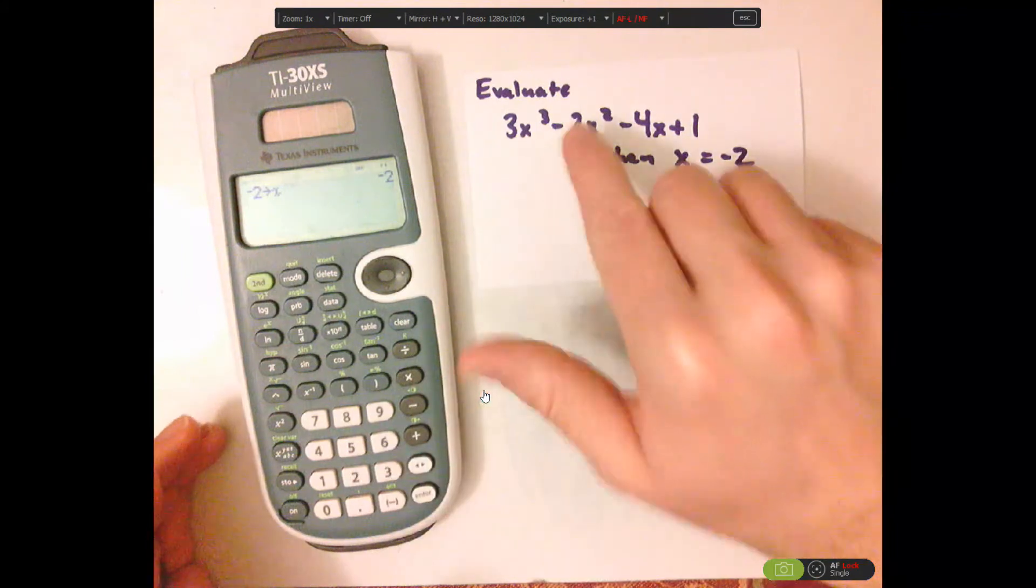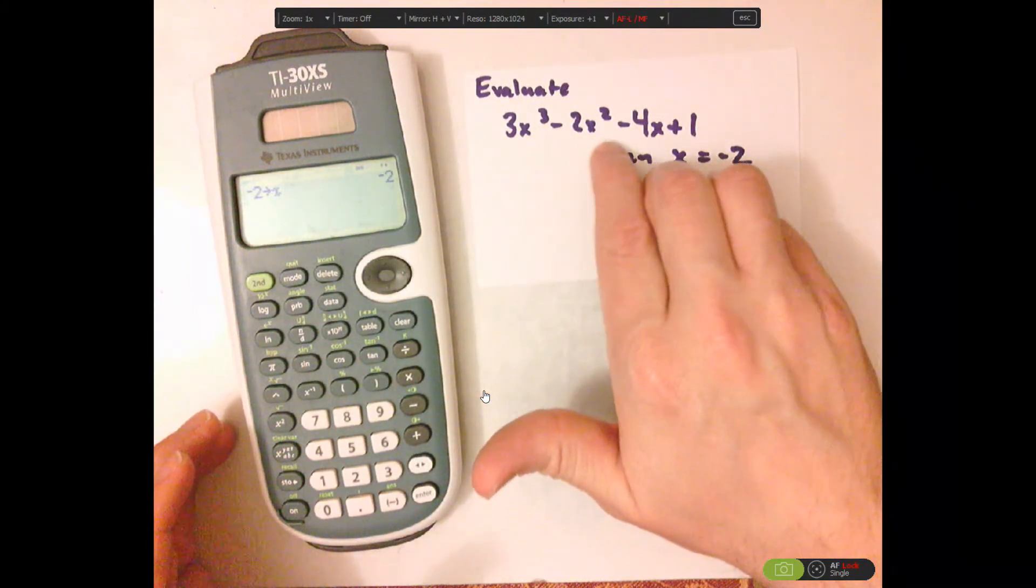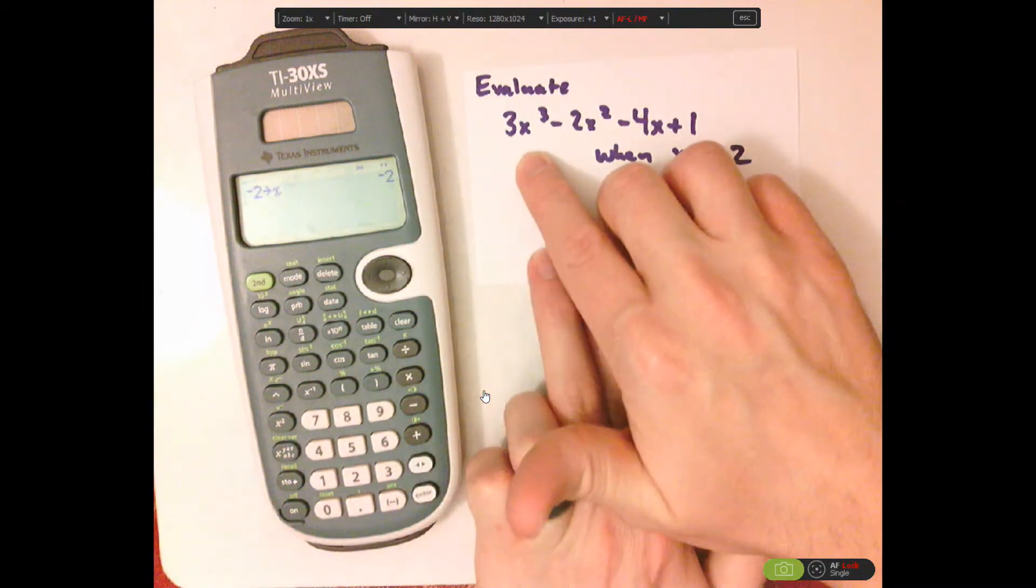Now, you could just type this, 3 parentheses negative 2 cubed, you could do that. But doing it this way, you can just type it in as is.